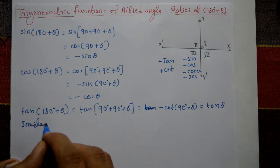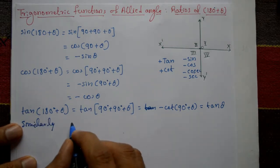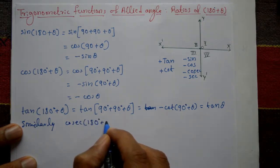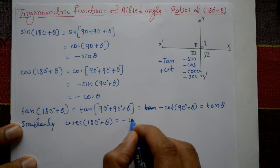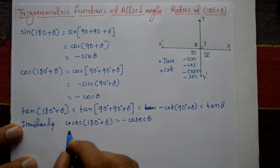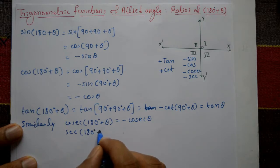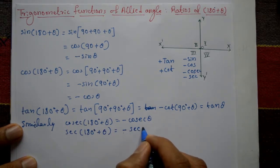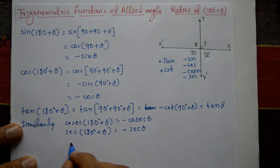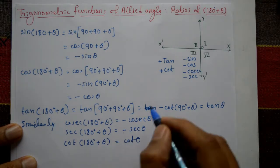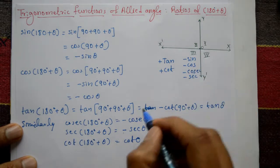Similarly, the remaining ratios are: cosec(180° + θ) = −cosec θ, sec(180° + θ) = −sec θ, and cot(180° + θ) = +cot θ. So only tan and cot are positive in the third quadrant; all remaining ratios are negative.